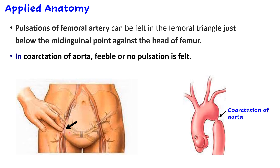If the pulse is feeble bilaterally — on both sides — it can indicate coarctation of the aorta. Coarctation of the aorta is a narrowing of the aorta, an embryological malformation. If the femoral pulse is feeble on both sides compared to the radial pulse, this indicates possible coarctation or narrowing of the aorta.